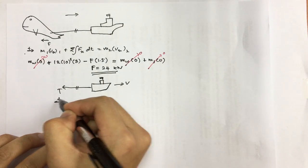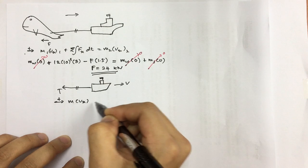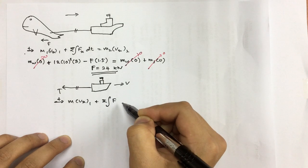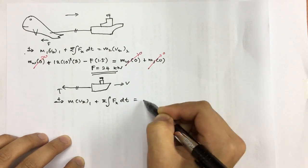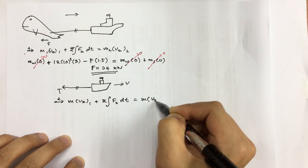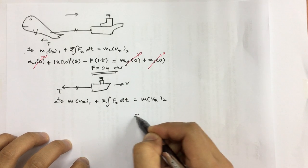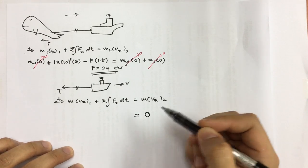Going to the right is positive. M Vx1 plus summation of the force times time equals to M Vx the second one. The second velocity is equals to 0. So this is going to be 0.